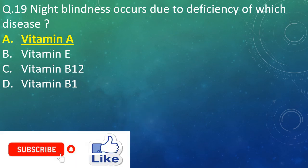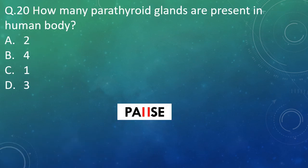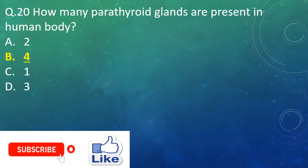Question 20: How many parathyroid glands are present in the human body? Option A: 2. Option B: 4. Option C: 1. Option D: 3. And the right answer is Option B — 4. So 4 parathyroid glands are present in the human body.